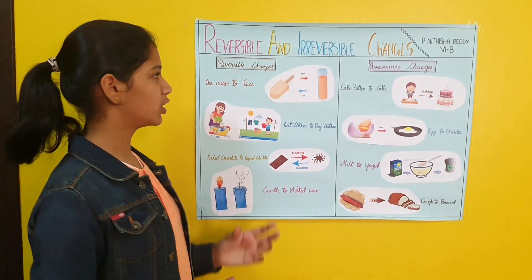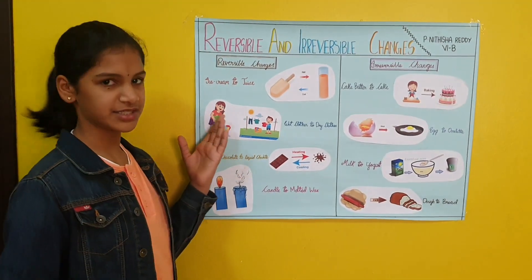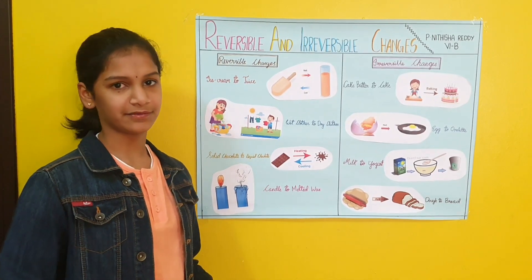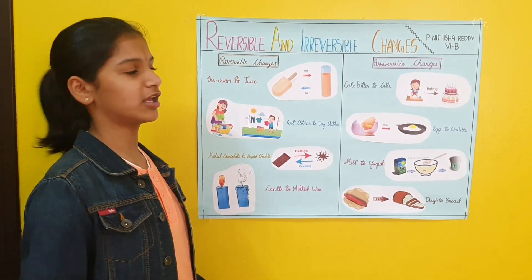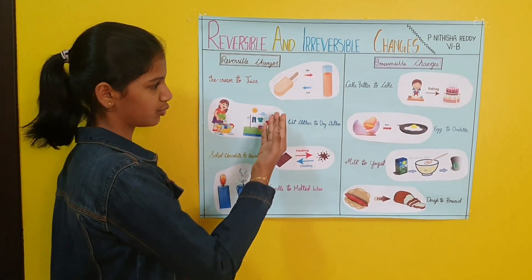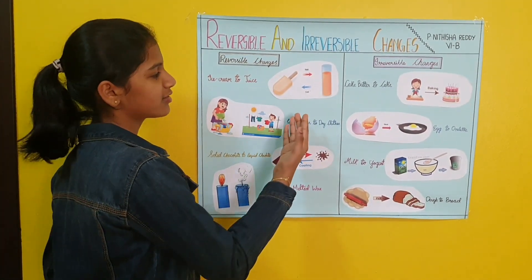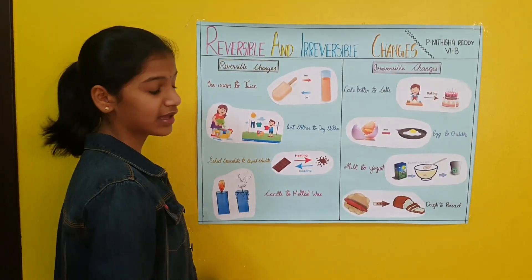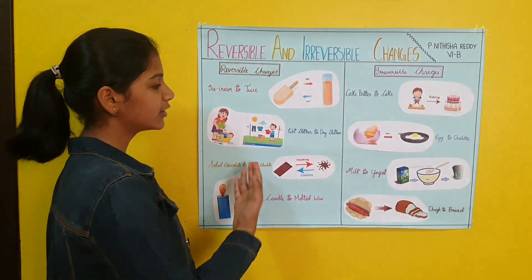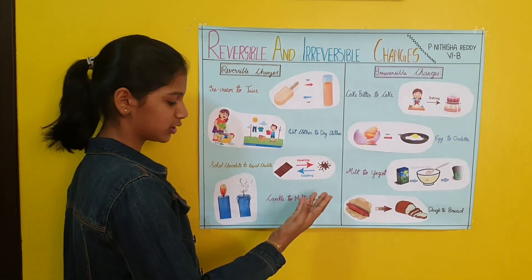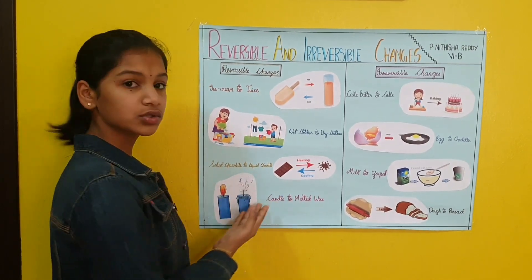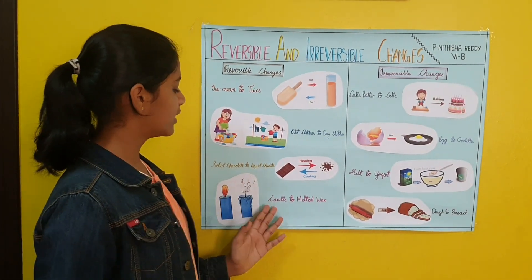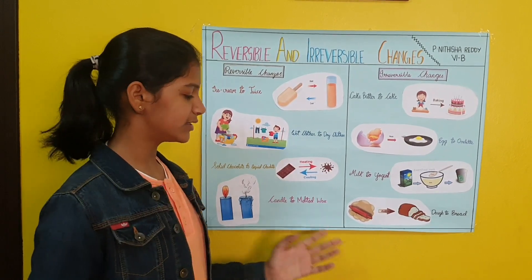So let us see what are reversible changes. Reversible changes are the changes which can be reversed. For example, ice cream to juice — ice cream can be made by cooling and juice can be made by heating. Wet clothes to dry clothes. Solid chocolate to liquid chocolate. Candle to melted wax.